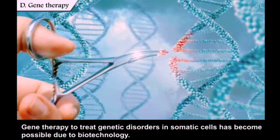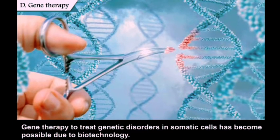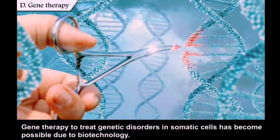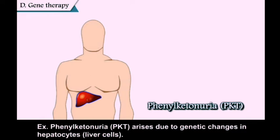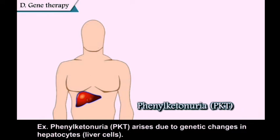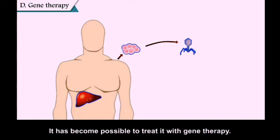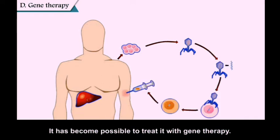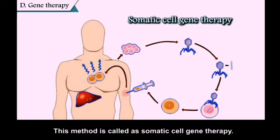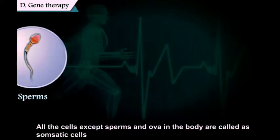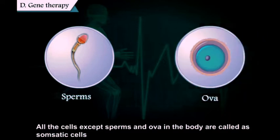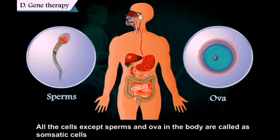Gene therapy: treating genetic disorders in somatic cells has become possible due to biotechnology. Phenylketonuria arises due to genetic changes in hepatocytes (liver cells). It has become possible to treat it with gene therapy — this is called somatic cell gene therapy. All cells except sperm and ova in the body are called somatic cells.